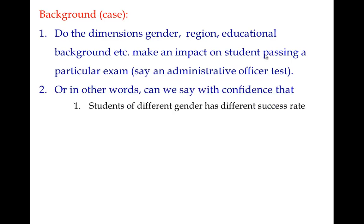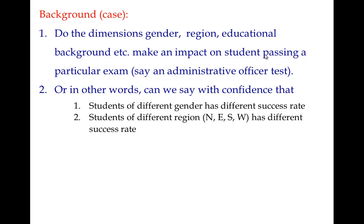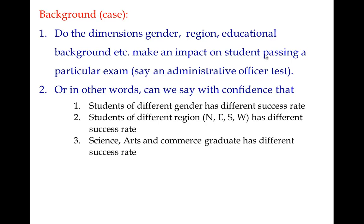Essentially, can we say with confidence that students of different genders have different success rates? Or that students from different regions — north, east, south, or west — have different success rates? Or that science, arts, and commerce graduates have different success rates? This can be extended to other dimensions like age group or height. We want to understand whether region, gender, or educational background has any association with success rate.